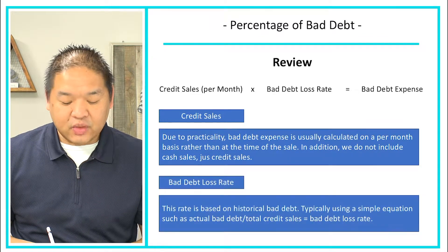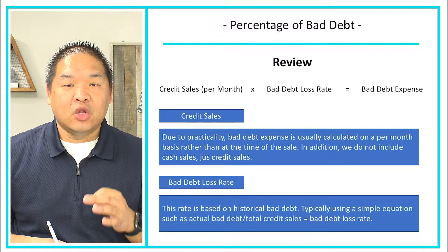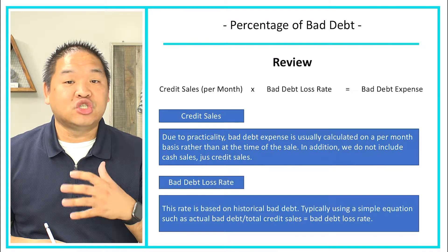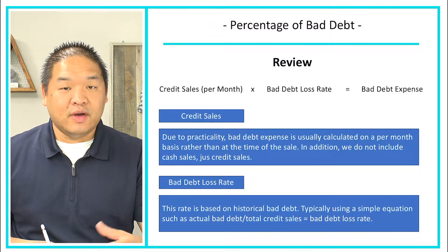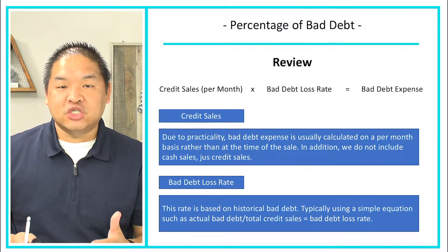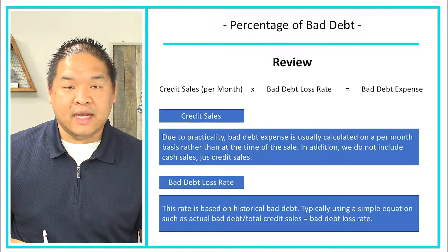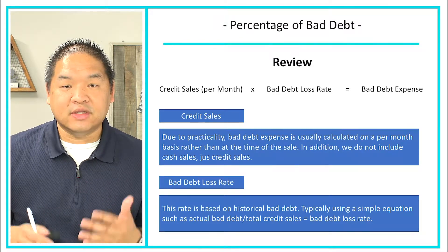We also need to find the bad debt loss rate. It should be given to us. If it's not given to us, there should be some information that helps us calculate it out.